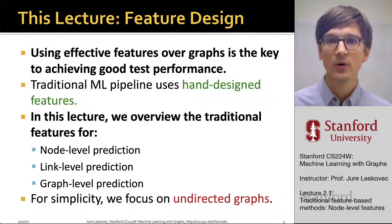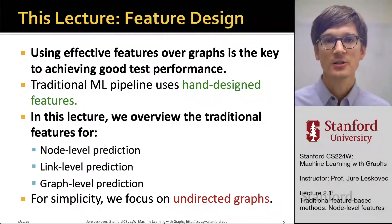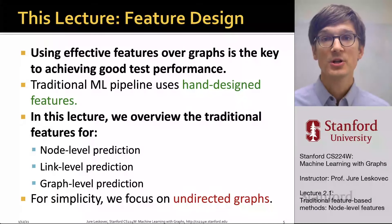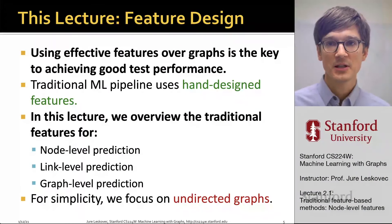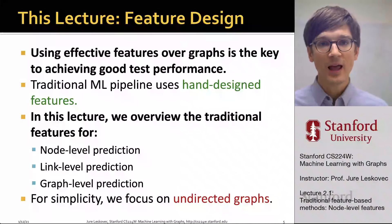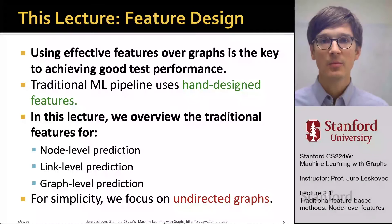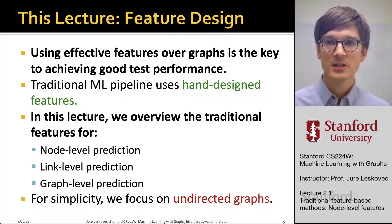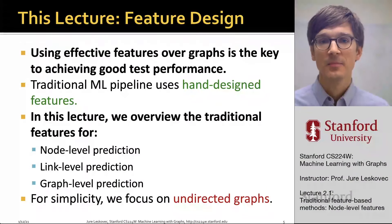In this lecture, we are going to focus on feature design, where we will use effective features over the graphs, which will be the key to obtain good predictive performance, because you want to capture the relational structure of the network. Traditional machine learning pipelines use hand-designed, hand-crafted features, and today's lecture will be all about these hand-crafted features. We are going to split the lecture into three parts: features that describe individual nodes for node-level prediction, features for pairs of nodes for link-level prediction, and features describing topology of entire graphs. For simplicity, we will focus on undirected graphs.